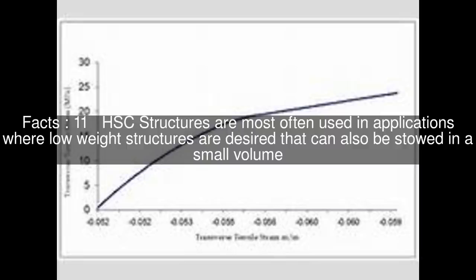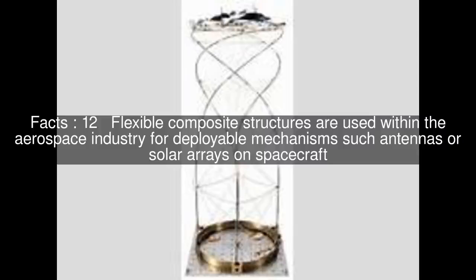HSC structures are most often used in applications where low-weight structures are desired that can also be stowed in a small volume. Flexible composite structures are used within the aerospace industry for deployable mechanisms such as antennas or solar arrays on spacecraft. Other applications focus on materials or structures in which multiple stable configurations are required.